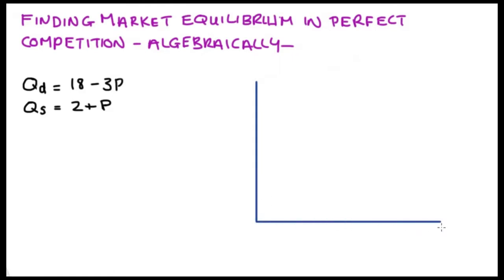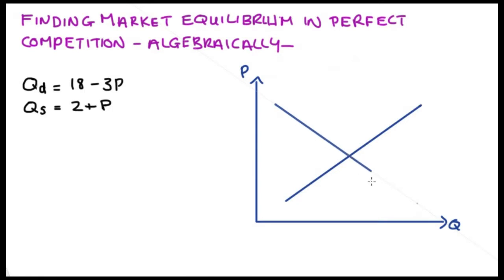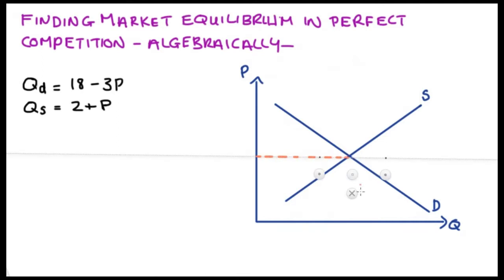So you would have seen these in class. We have two axes: quantity on the horizontal and price on the vertical. We have an upward sloping curve and a downward sloping curve. Our downward sloping curve is our demand curve and our upward sloping curve is our supply curve. The point of equilibrium — that point we want to solve for — occurs at the intersection of these two curves. We call the price associated with that intersection P star and the quantity Q star.